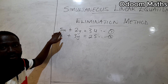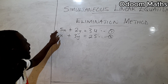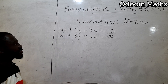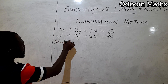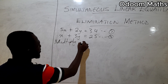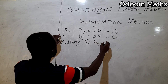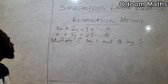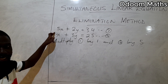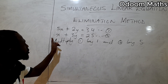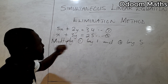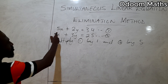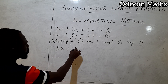Since we are removing x, we multiply equation 1 by 1 and equation 2 by 5 so that we get 5 in both x-coefficient positions. Multiplying equation 1 by 1 gives us 5x plus 2y equals 34 — call this equation 3.